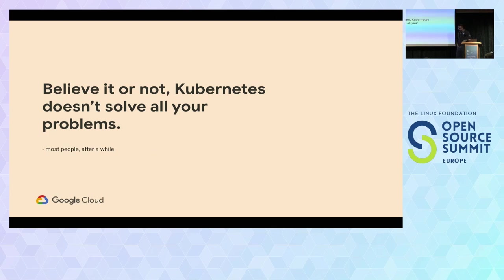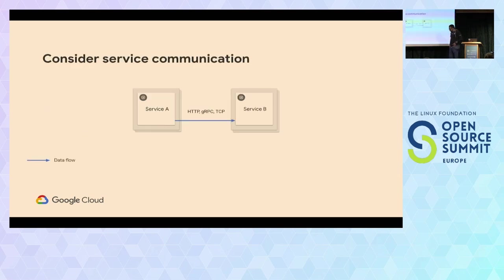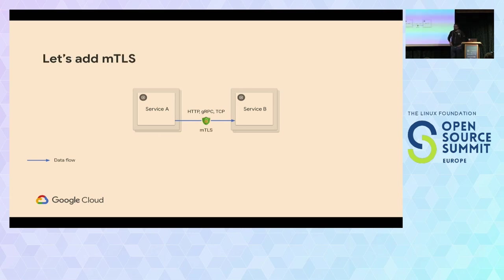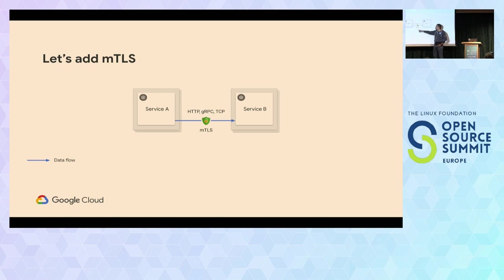Believe it or not, Kubernetes doesn't solve all your problems. Take one simple example: you have two services talking to each other over HTTP or gRPC. At some point a security person comes and says we want to add MTLS. MTLS stands for mutual TLS. It's essentially TLS where a client verifies the identity of the server, but with MTLS, the server also verifies the identity of the client. In normal TLS — what happens between you and Google.com — you as the client verify the server's certificate to make sure the server is who they say they are.